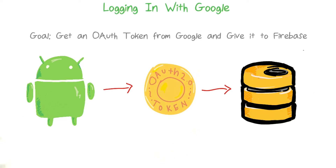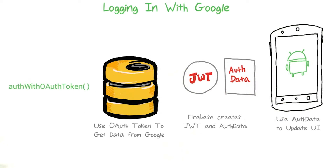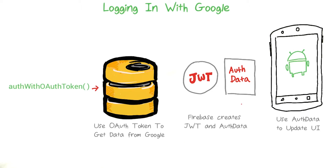The big picture goal is to get an OAuth token from Google and then hand that token over to Firebase, and this is all going to happen on the Android app side. Once you've gotten your OAuth token, the process is very similar to logging in with email and password. You call auth with OAuth token, then Firebase uses the OAuth token to get data from Google, after which Firebase creates for you that handy JWT and your auth data object. And then finally, you get your auth data object so that you can update your Android UI.